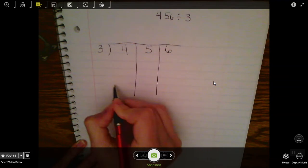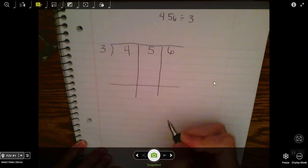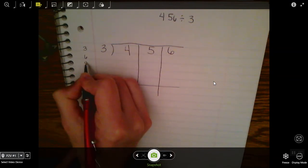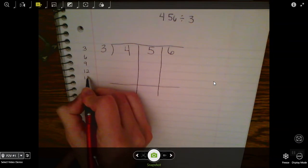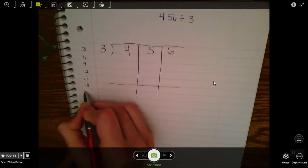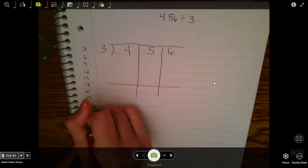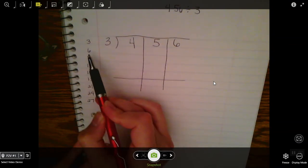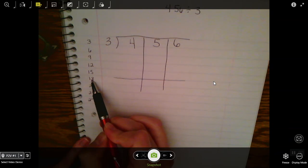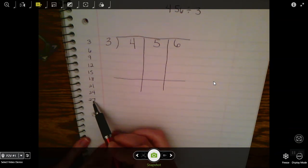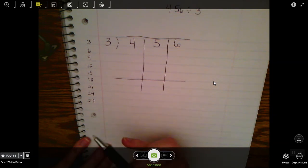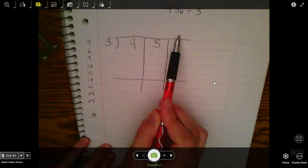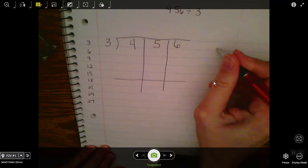I'm going to start by writing out my threes facts on the side: 3×1, 3×2, 3×3, etc., and I'm going to stop at 3×9. I don't have to write 3×10 because that would be too many numbers for one box on top. The biggest number I'm going to have on top of a number is 9.